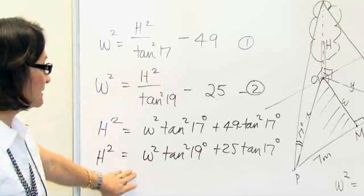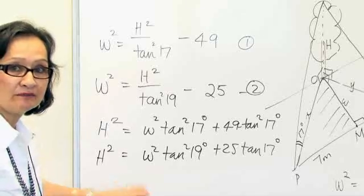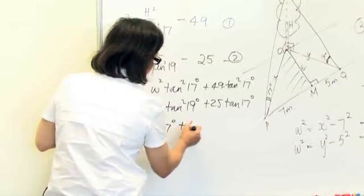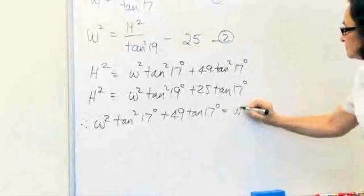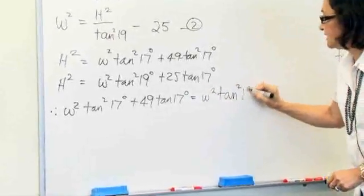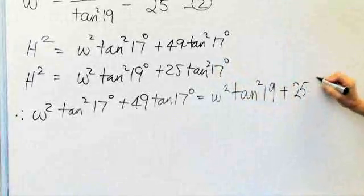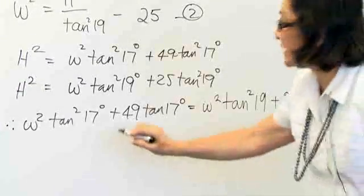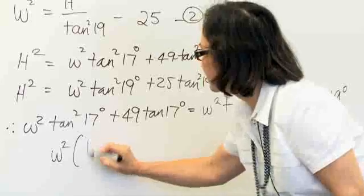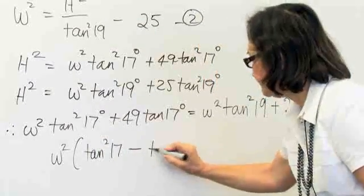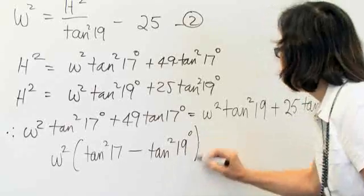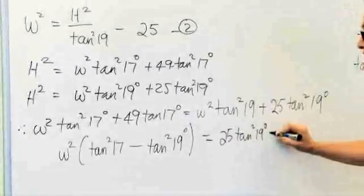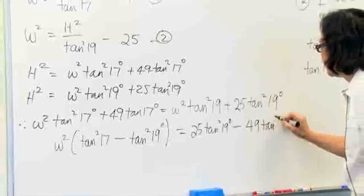We can now equate these two equations and solve for W squared. Rearranging this equation, we get that W squared into tan squared 17, take away tan squared 19, is equal to 25 tan squared 19, take away 49 tan squared 17.